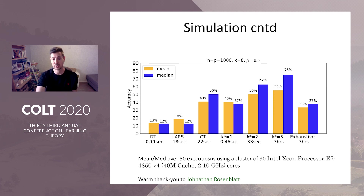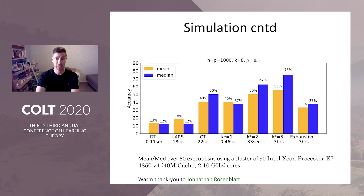Compared to polynomial time algorithms, K-star equals one roughly performs like covariance thresholding and much better than diagonal thresholding or L1 relaxation of sparse PCA. In theory we would expect log n to perform like covariance thresholding, but in practice K-star equals one is enough.